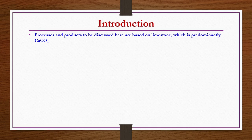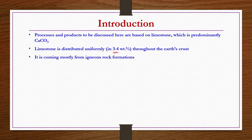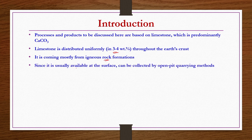The basic raw material for cement as well as lime is limestone, which is predominantly calcium carbonate, distributed uniformly throughout the earth's crust at about 3 to 4 weight percent. It comes mostly from igneous rock formations and since it is usually available at the surface, it can be collected by open pit quarrying methods easily. You do not need a big mining infrastructure to get this raw material.